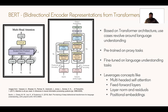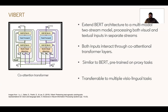BERT was introduced in 2018; 2017 was the year transformers were introduced, and BERT is based on the transformer architecture, which is important for language understanding. In the BERT architecture, you have an encoder and a decoder. The encoder consists of stacked layers with multi-headed attention followed by a feedforward layer in each layer. This architecture is pre-trained on proxy language understanding tasks and can then be fine-tuned for specific tasks. Similar to BERT, ViLBERT is an architecture extended to the multimodal use case where it can process both visual and textual inputs, and both inputs interact through co-attentional transformer layers. Like BERT, it is pre-trained on proxy tasks and then transferable to multiple visual-lingual tasks.